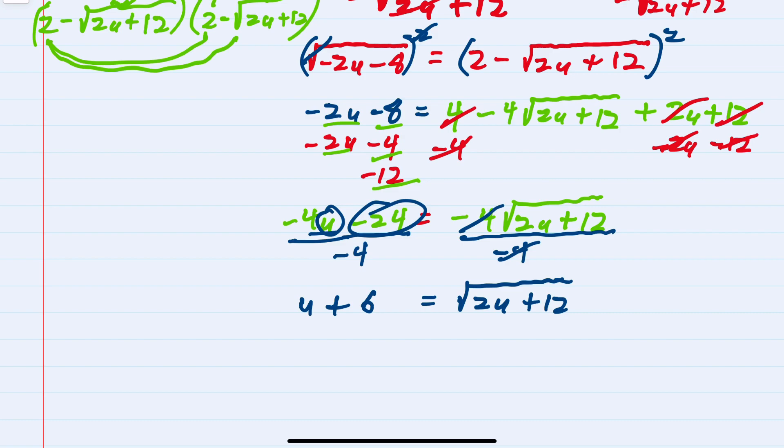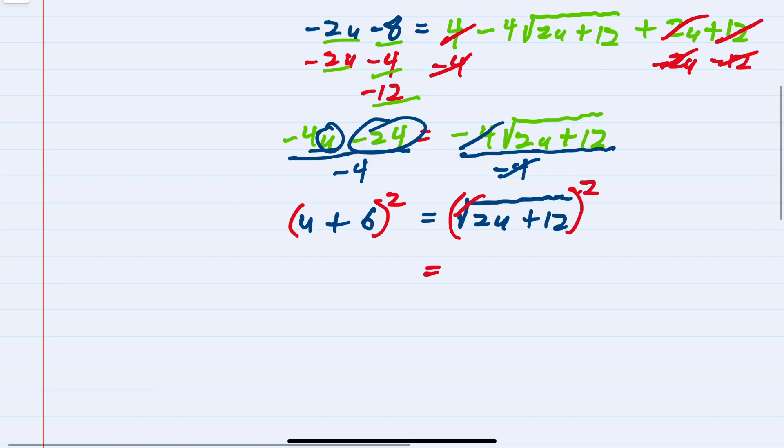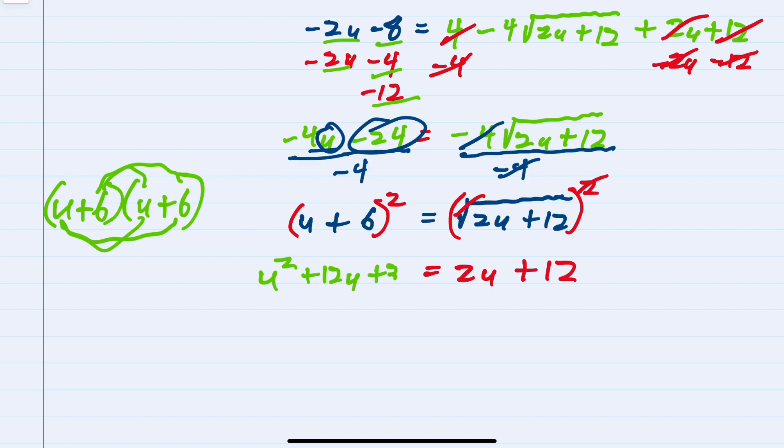Our expression is now much simpler, but we still have a radical on the right. I can again square both sides to remove this radical, giving me 2u+12 on the right hand side. On the left hand side, (u+6)² gives us u², then +6u and another +6u, so +12u, and then 6 times 6 is +36.